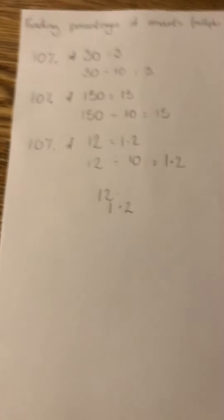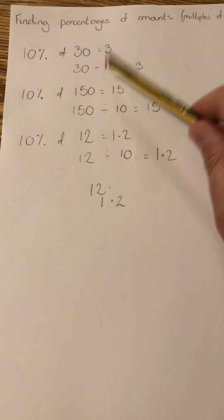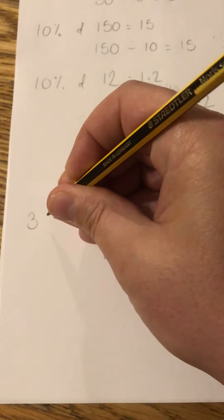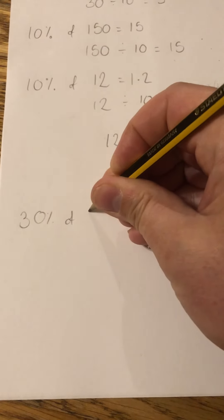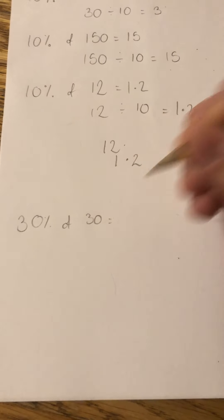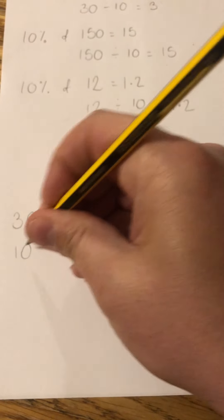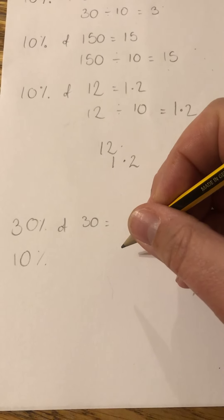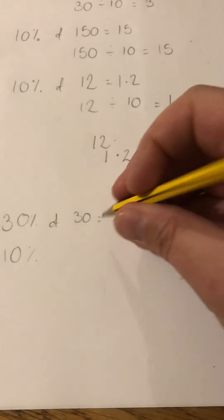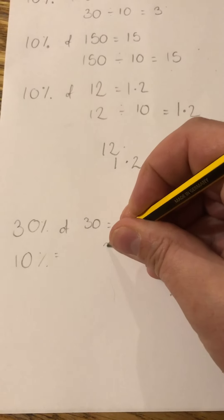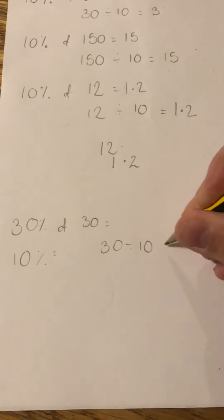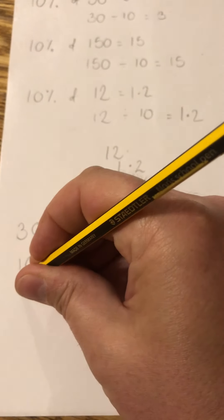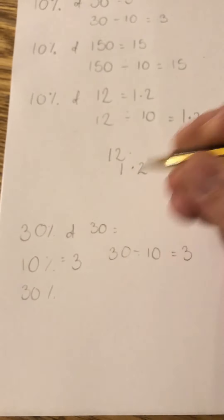However, we're going to look at finding 20%, 30%, 40%. I'm going to go back to my first example: it was 10% of 30. So if I wanted 30% of 30, what I'd first do is find 10% by dividing by 10. So 10% would be 3.